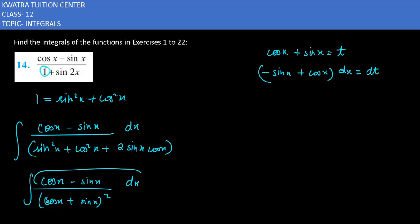If you look at the denominator, the numerator is the derivative of the denominator. So it will be dt over t square.